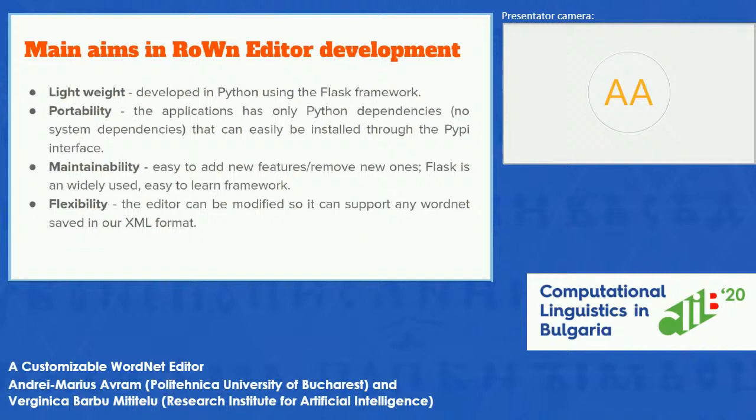What were the main aims in our development of the RoWordNet Editor? The first one was being lightweight — we wanted the application to be fast and not have too much overhead. This is why we chose the Flask framework, which is a lightweight framework and comes only with the basic tools for web development, and you can add the tools you want in an ad hoc manner.